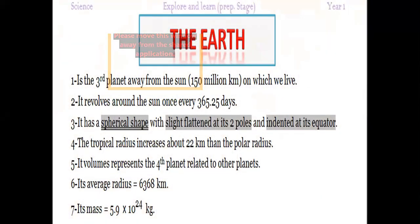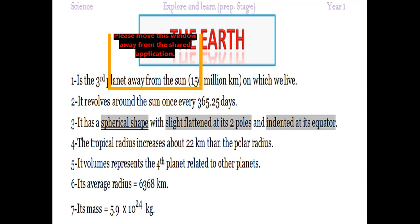Concerning our planet Earth, its order is considered as the third planet away from the Sun. The average distance between the Sun and planet Earth is 150 million kilometers. Earth revolves around the Sun once every 365 and a quarter days. The shape of planet Earth is spherical with slight flattened at its two poles and indented at the equator.